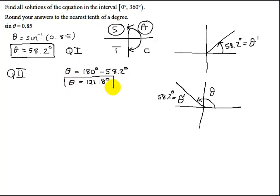So that is the other angle between zero and 360 whose sine is equal to what we were given originally of 0.85. And if you're not sure, you can double check this at the end.